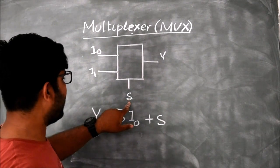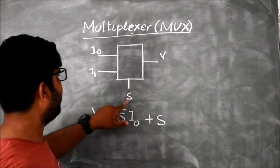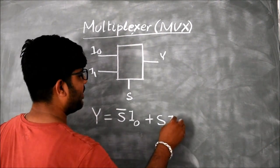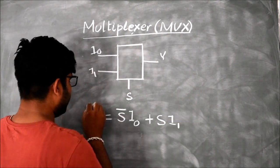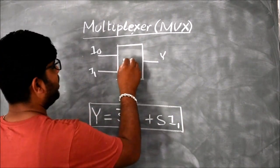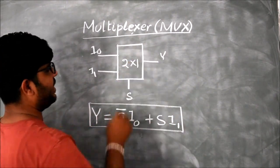When S is equal to normal form, I mean 1, then Y is equal to I1. So this is the equation or logical expression for the 2 cross 1 multiplexer.